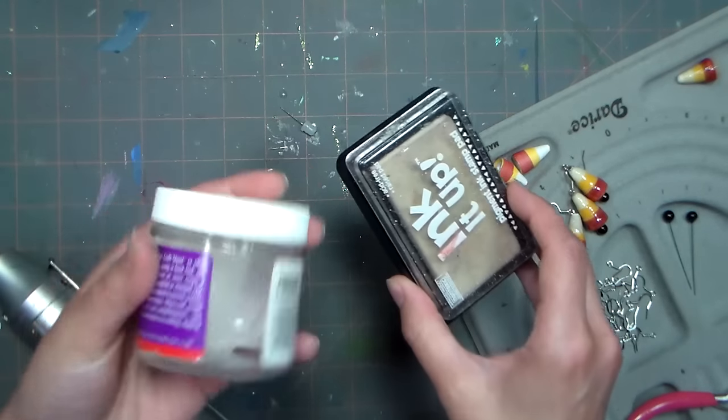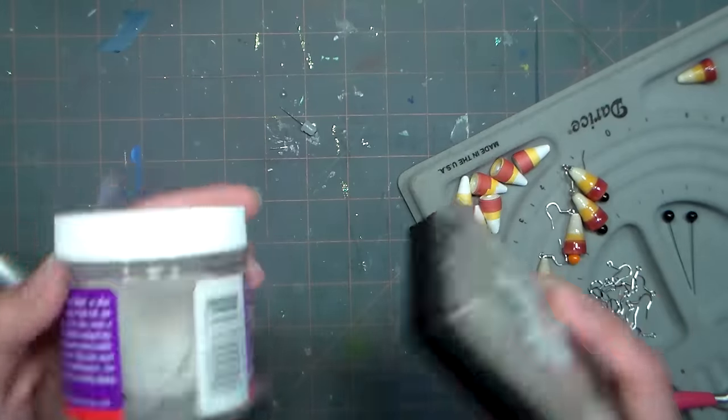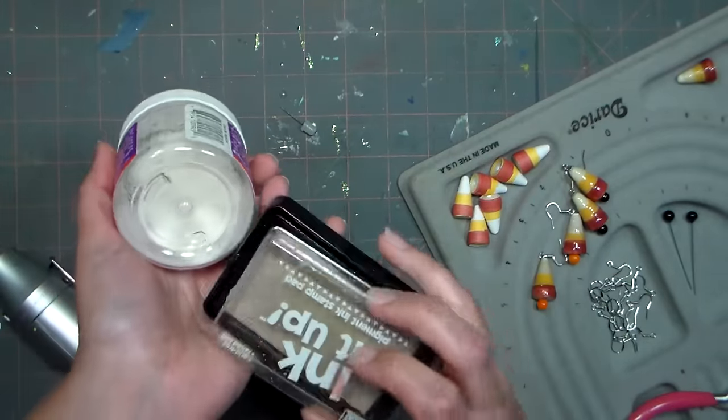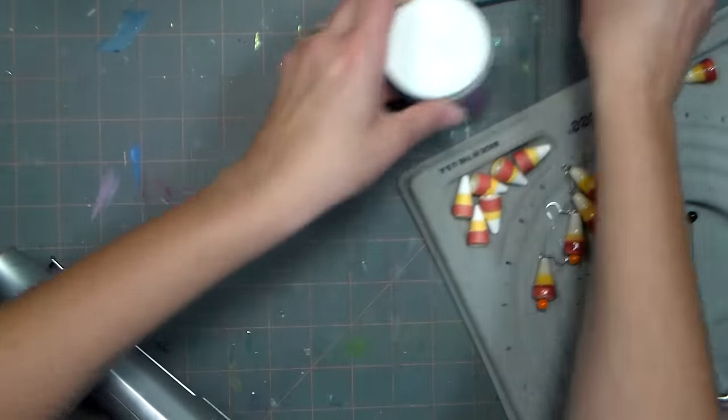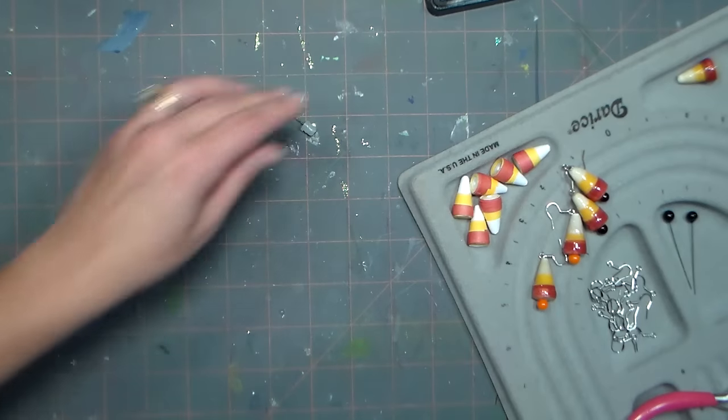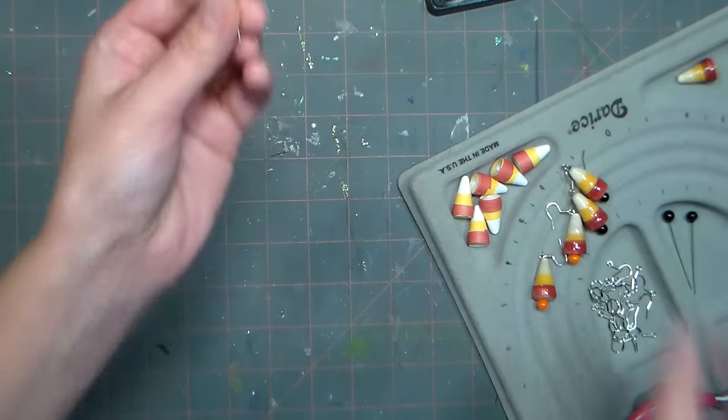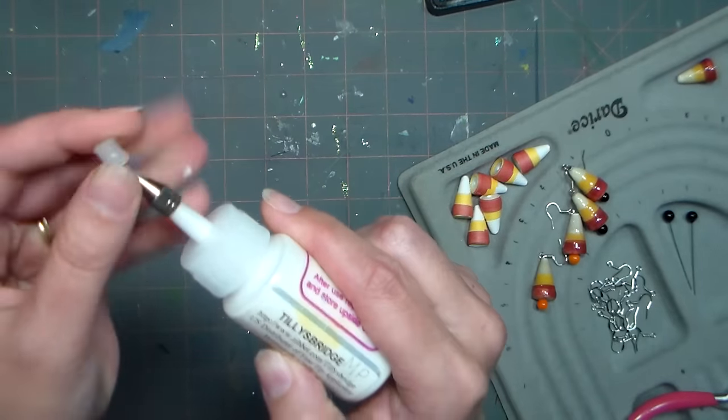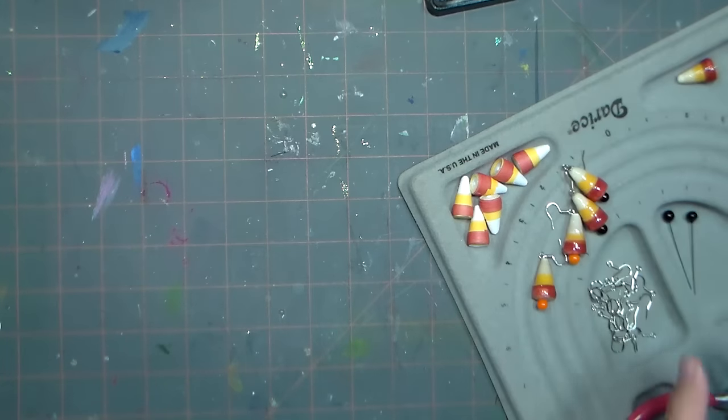When you're done with your embossing powder and your ink pad, make sure you cap both of them up so they'll give you lots of use in the future. You don't want your pad drying out, you don't want this spilling, and you don't want dust to get into this. I forgot to put the cap on my glue, that's not good because then I'll have a clogged fine tip applicator.